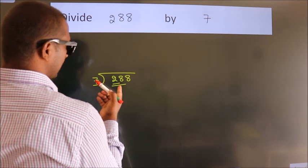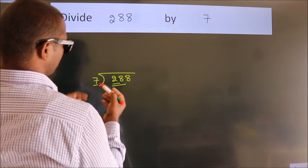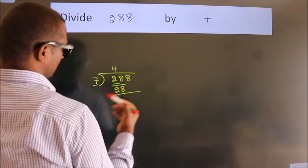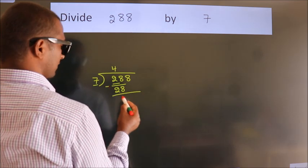When do we get 28? In the 7 table, 7 fours is 28. Now we should subtract. We get 0.